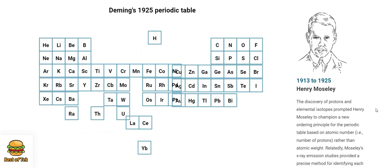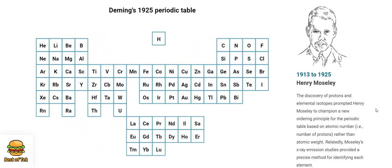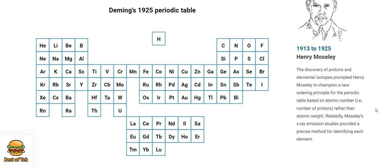1913 to 1925. Henry Moseley. The discovery of protons and elemental isotopes prompted Henry Moseley to champion a new ordering principle for the periodic table, based on atomic number — the number of protons — rather than atomic weight. Moseley's X-ray emission studies also provided a precise method for identifying each element.